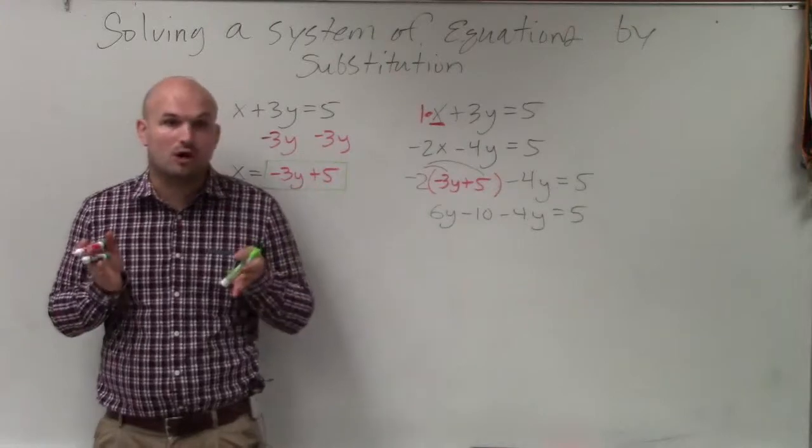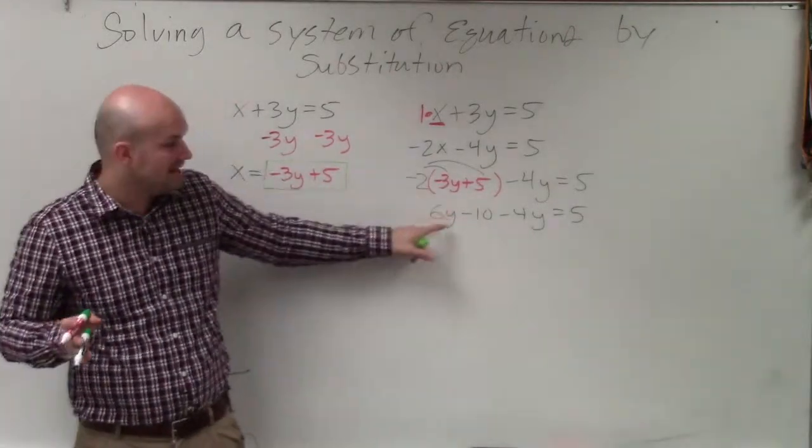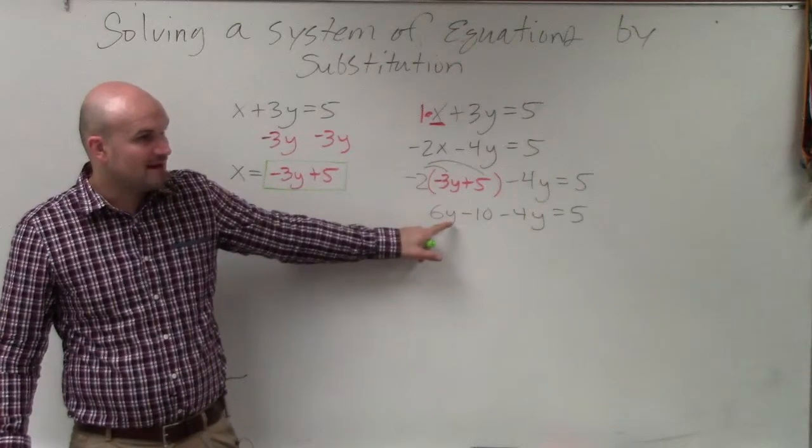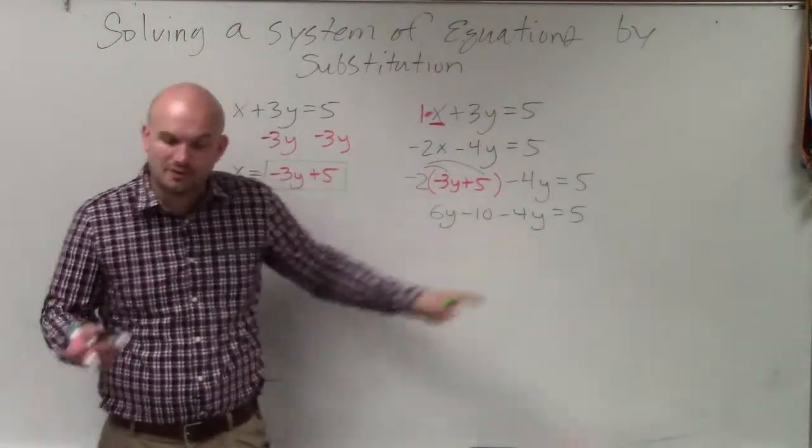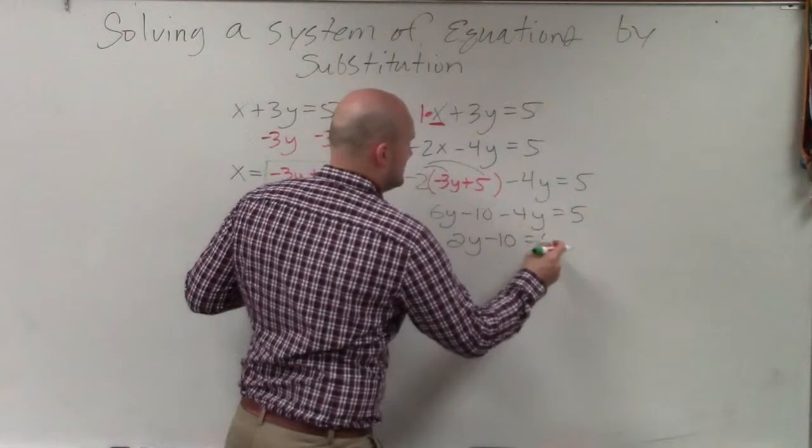Again, we do not have to use properties of equality when we have like terms on the same side. I can simply just combine 6y and negative 4y, because they're on the same side of the equation. So therefore, I get 2y minus 10 equals 5.